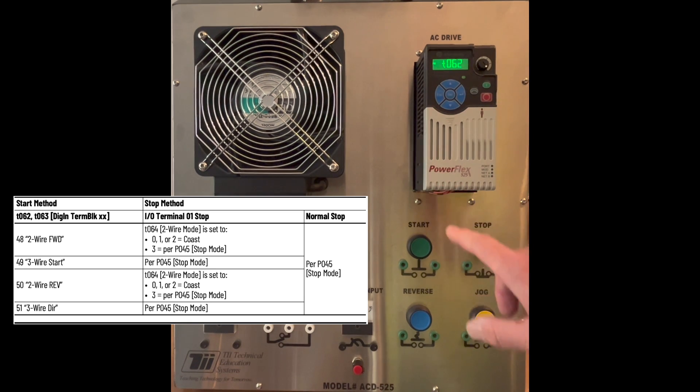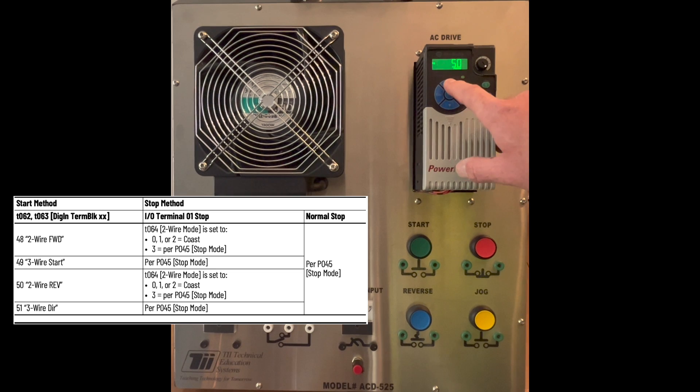We're going to hit enter again. Escape. Then we're going to enter into 63. T62 set the start button, and 63 will set the stop button, which is wired to this terminal. So we're going to hit select in here, and we're going to change this to 51. Hit enter again. Hit escape three times.